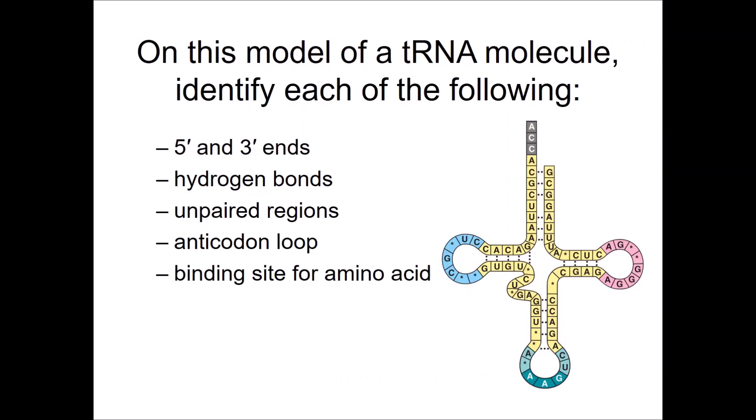You should be able to identify each of the following on this model of a tRNA molecule: the five prime and three prime ends, hydrogen bonding (those are the dotted lines), unpaired regions, the anticodon loop, and the binding site for the amino acid.